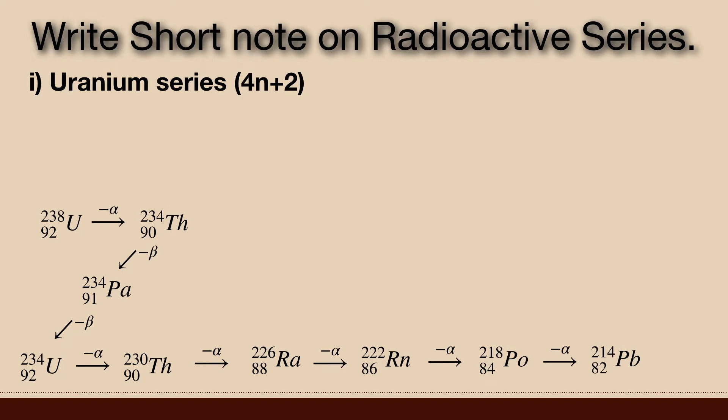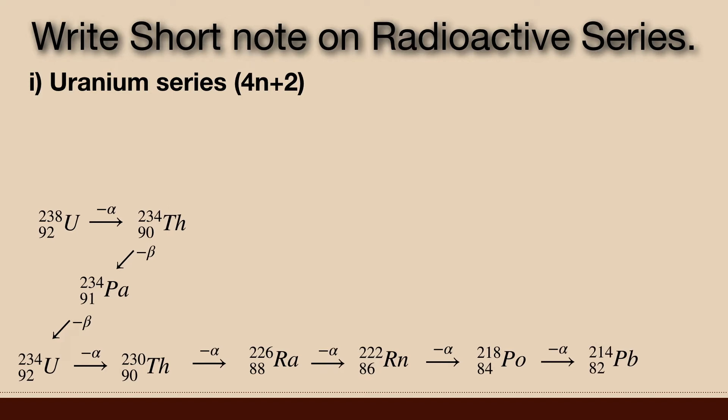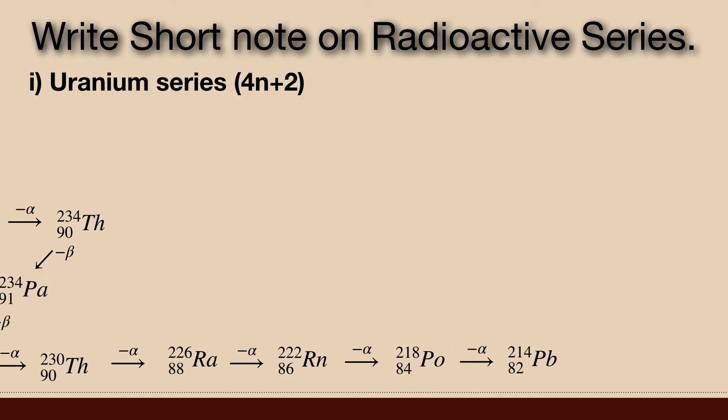Astatine, bismuth, lead, polonium, protactinium, radium, radon, thallium and thorium. All are present at least transiently in any natural uranium containing sample, whether metal, compound or mineral. The series terminates with lead 206.